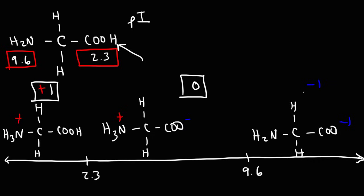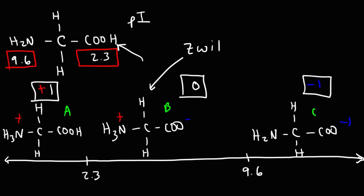To calculate the pI, we need to determine the pH of the zwitterion. Which of these structures represents the zwitterion — structure A, B, or C? The zwitterion is electrically neutral; it doesn't migrate in the presence of an electric field. It has both a positive and a negative charge. So structure B is the zwitterion. To calculate the pI, we need to take the average of the pKa values to the left and to the right of the zwitterion.